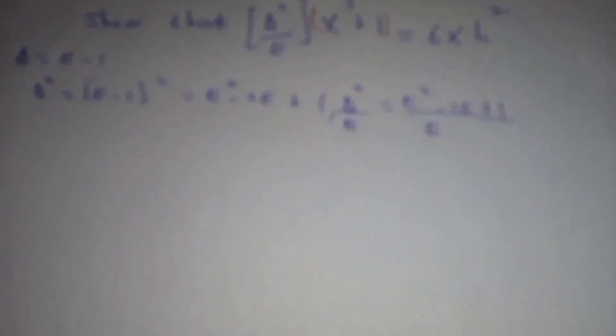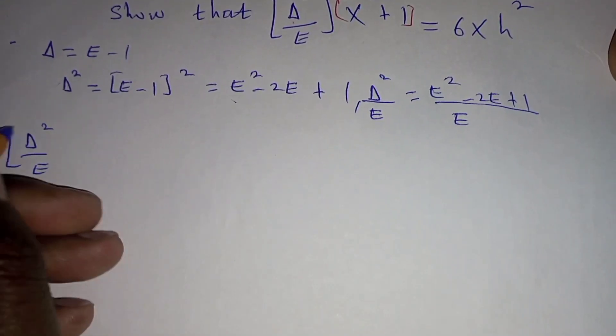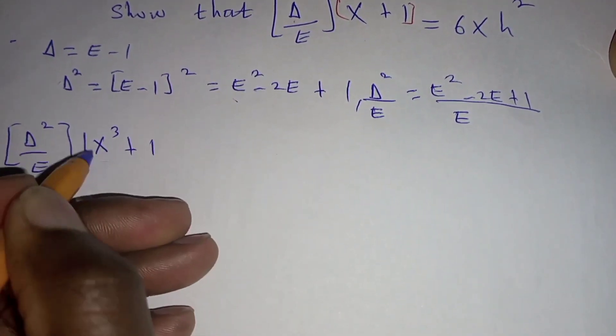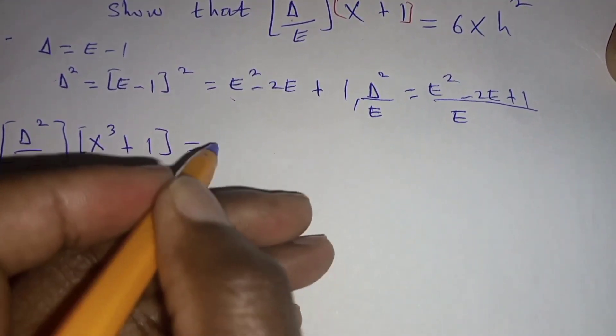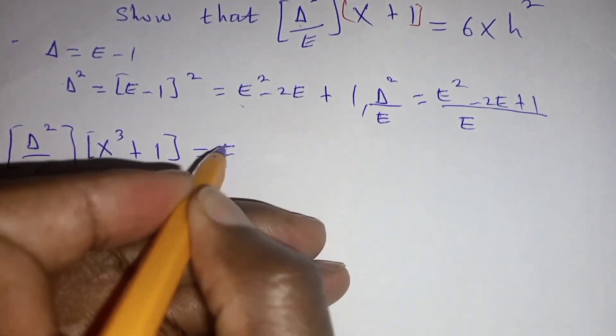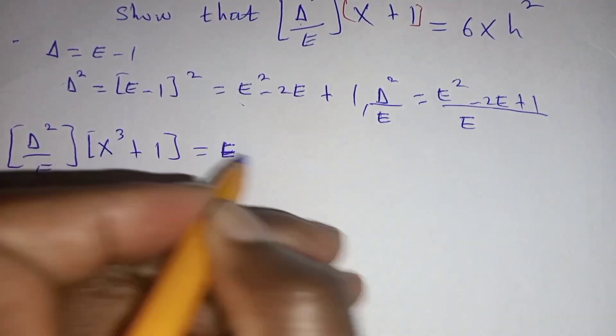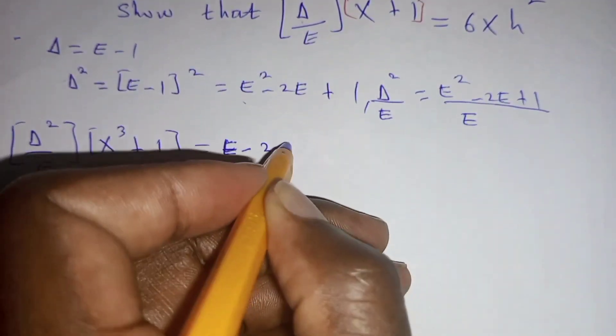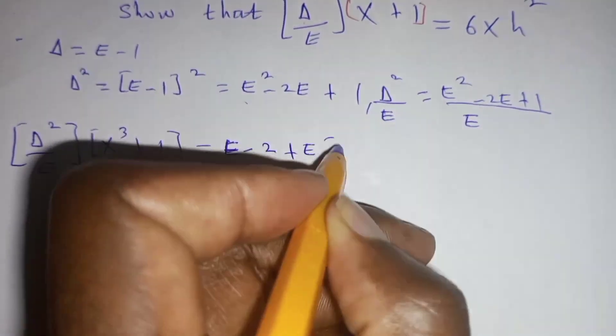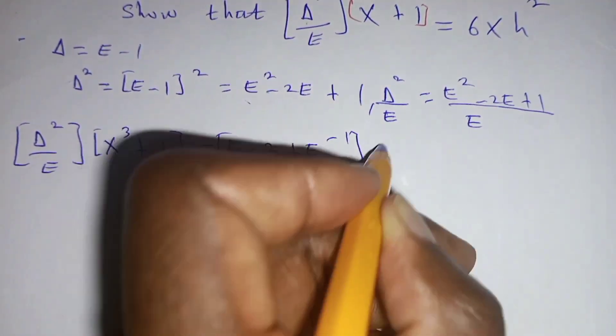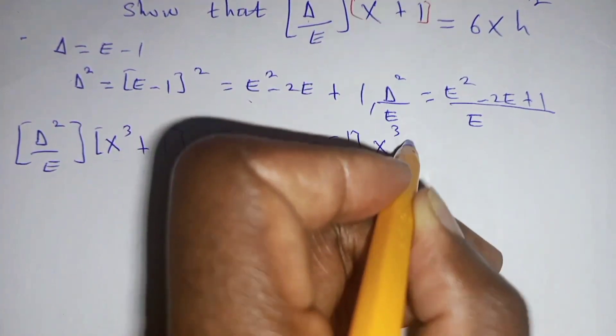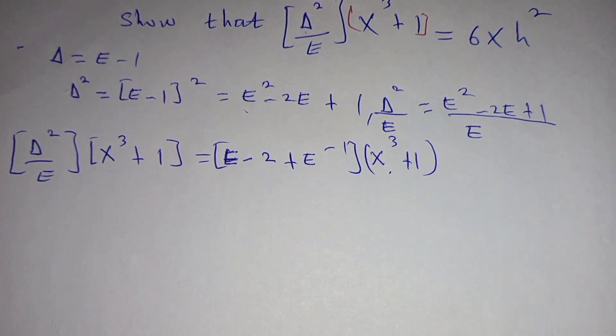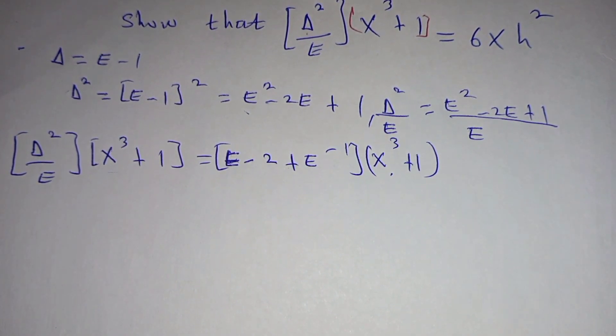We are going to have this shift operator, which is equal to E minus 2 plus E power negative 1 multiplied by x cubed plus 1. That is what you obtain there after simplifying.